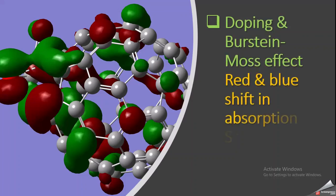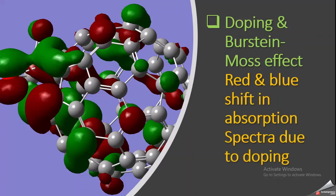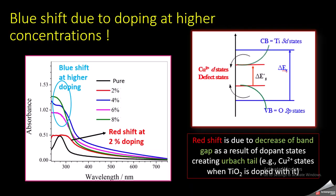Hello students. In this video we are going to see what is doping and what is the Burstein-Moss effect, which is related to doping, and why red and blue shifts occur in the absorption spectrum due to doping. Here in this slide I have shown a graph of absorbance versus wavelength.